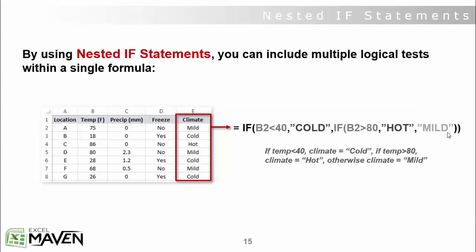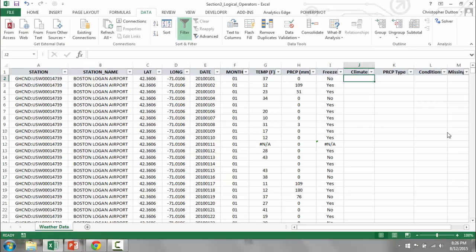So let's dive into Excel and get our hands dirty. We're going to be working with column J, the climate column, and basically I want to do exactly what I just described. So I want to create a nested if statement to categorize climate as cold if the temperature is less than 40, as hot if the temperature is greater than 80.